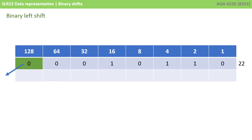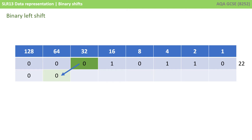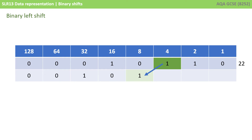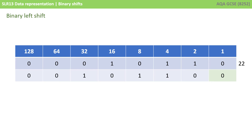The bit in the 128 column is going to disappear off the left-hand side. The bit in the 64 column is going to move over, left-shifted one position, so that it becomes a zero. The bit in the 32 position is going to shift one place to the left. The bit in the 16 position shifts to the left, the bit in the 8 position shifts one space to the left, the same with the 4 position, the 2 position, and the 1 position. We end up with an empty slot on the far right, which we can simply pad with a zero.